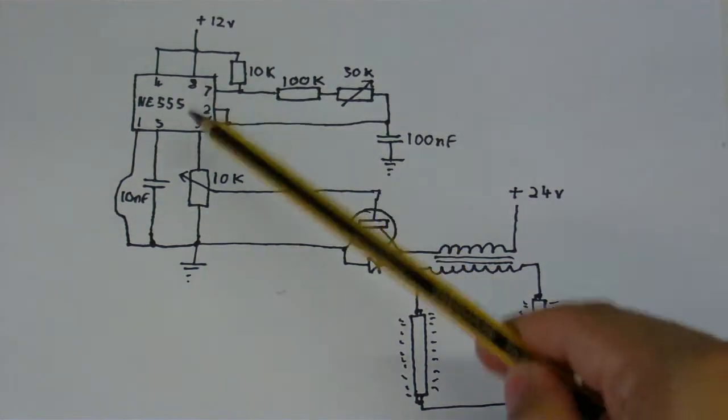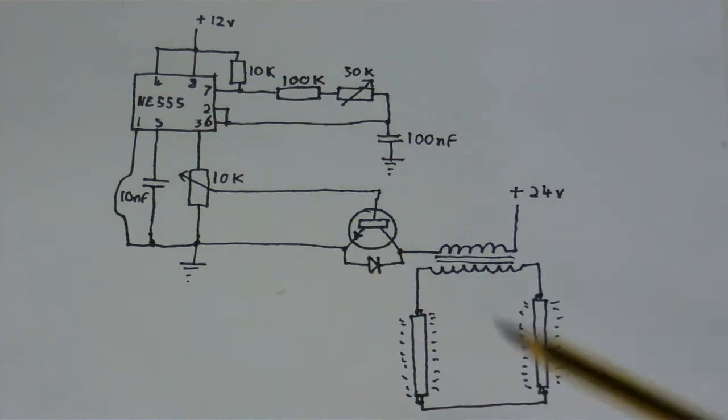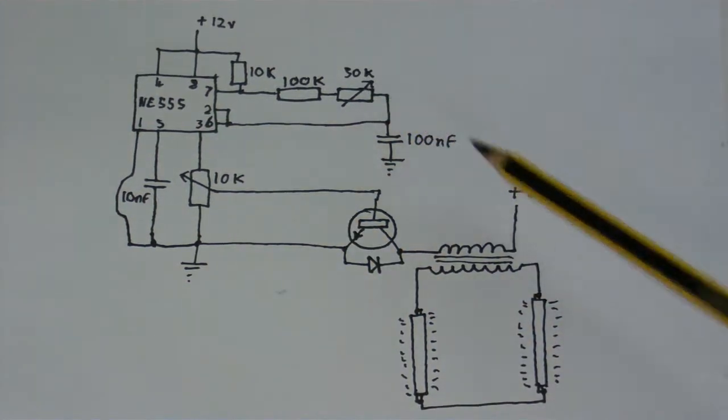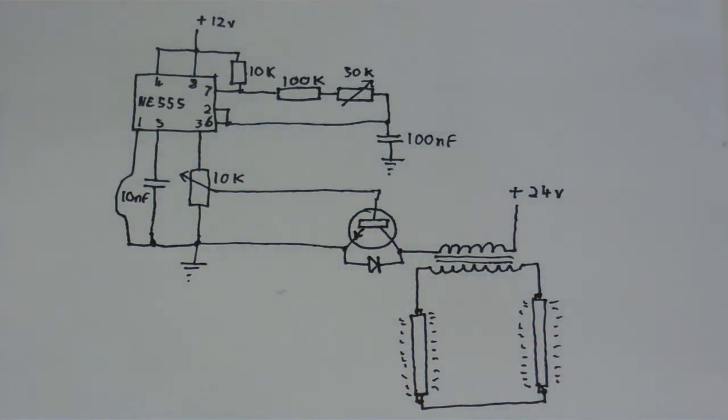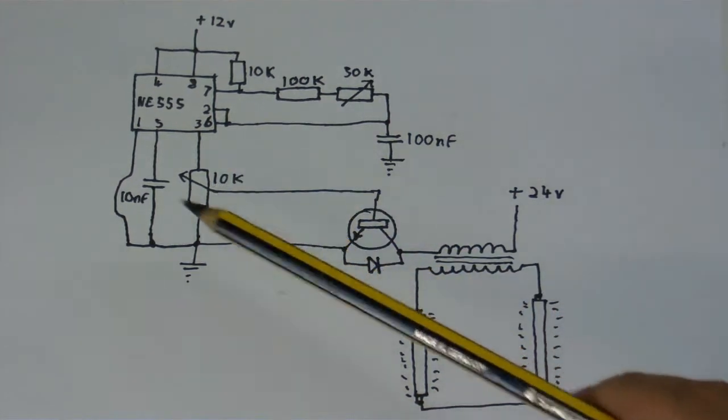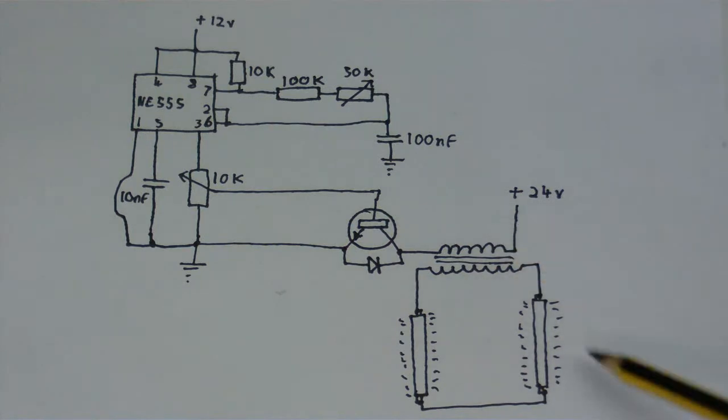It uses a 555 timer chip. And this control here is to control the frequency so I can fine tune it to 60 Hz. This control here adjusts how much power gets into the transformer that powers the lights.